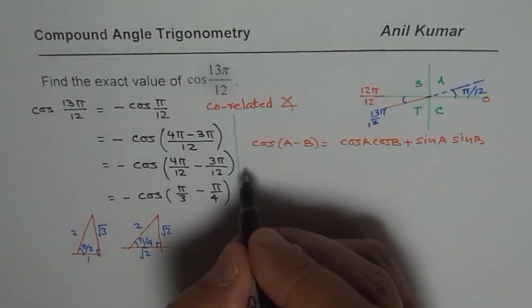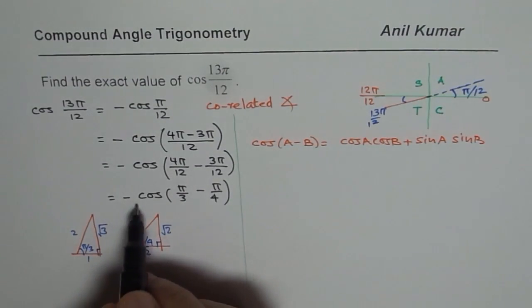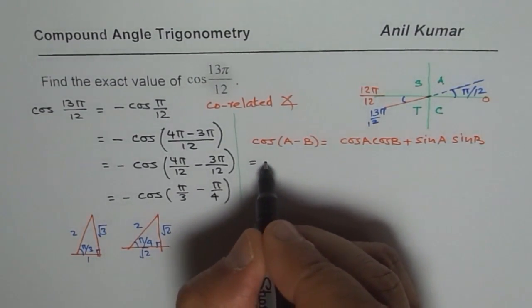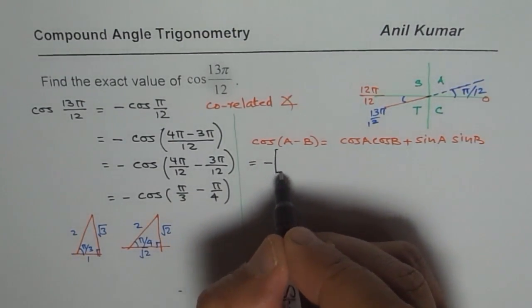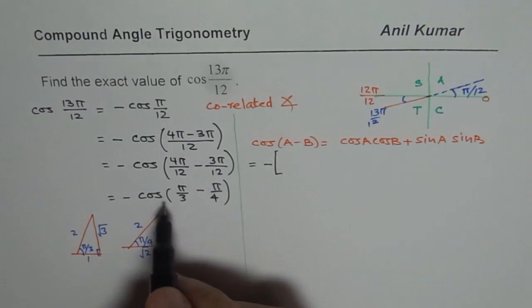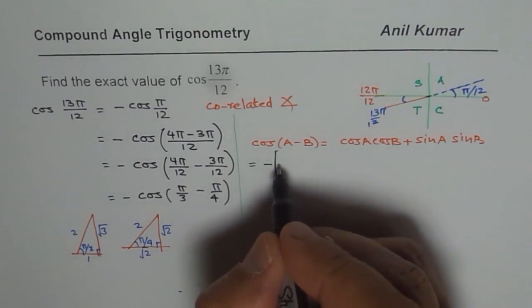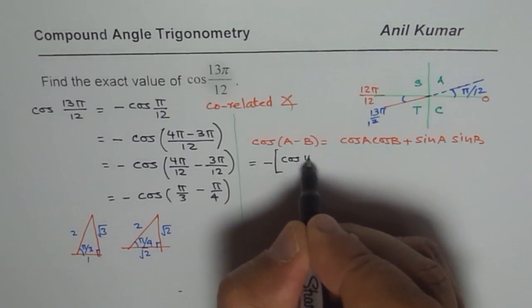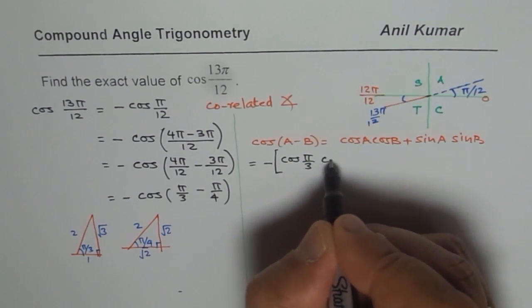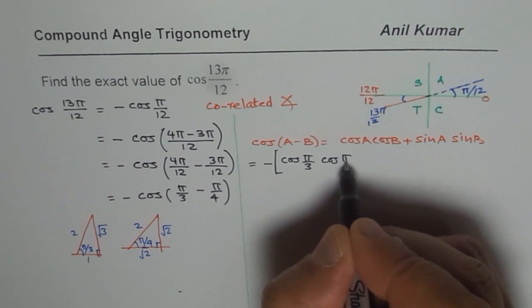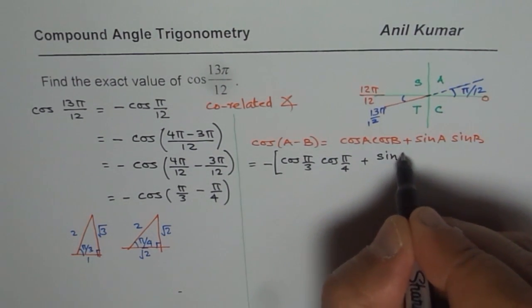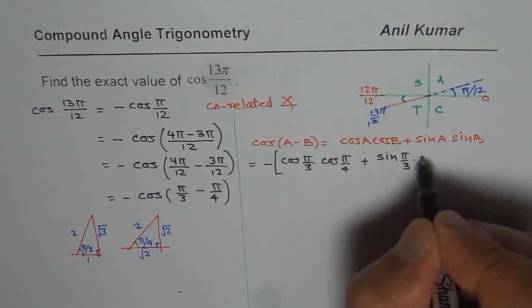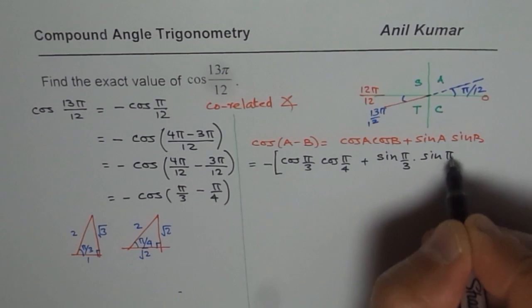So, what we have here is we are working with minus cos of. So, we will write minus, this is this minus, cos of. Let me write brackets here so that becomes very clear and I will expand using the formula. So, we have cos of π/3, cos of π/4 plus sin of π/3 times sin of π/4.